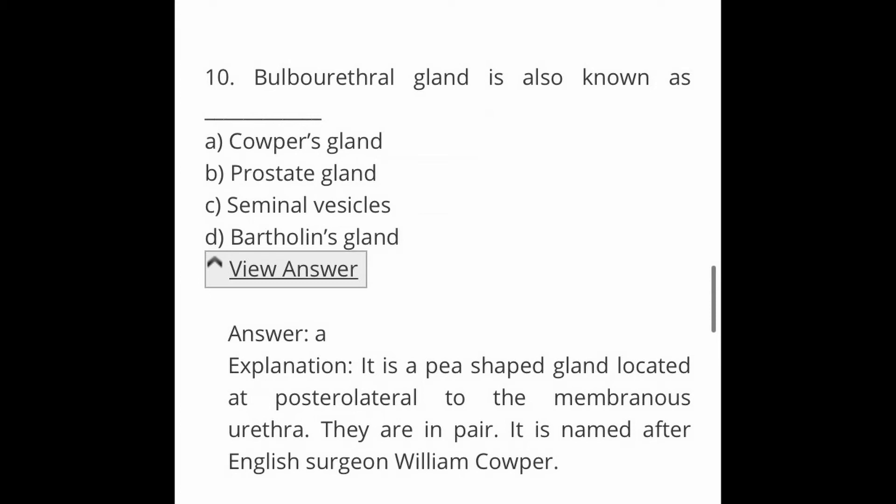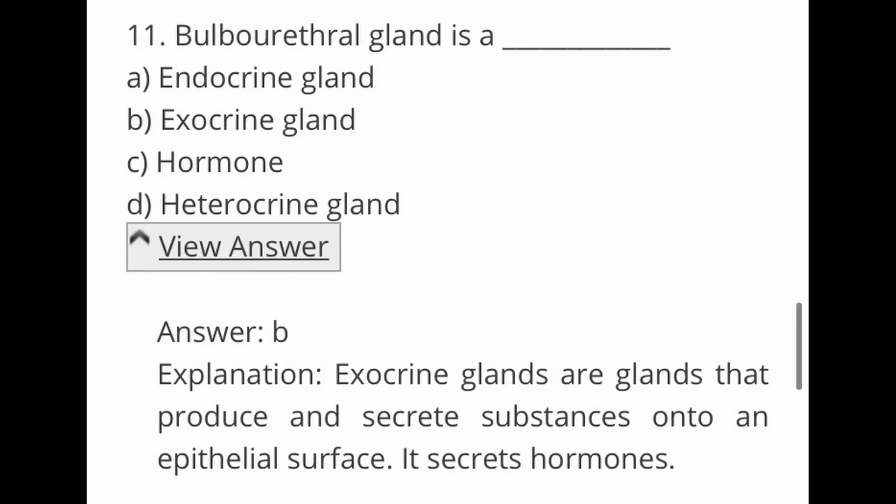Next question: the bulbourethral gland is? Options are A. Endocrine gland, B. Exocrine gland, C. Hormone, and D. Heterocrine gland. The answer is B, exocrine gland. Exocrine glands are glands that produce and secrete substances onto an epithelial surface.